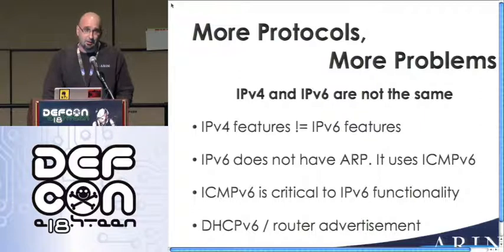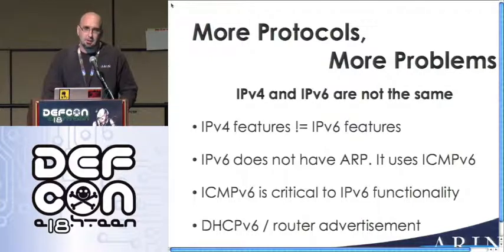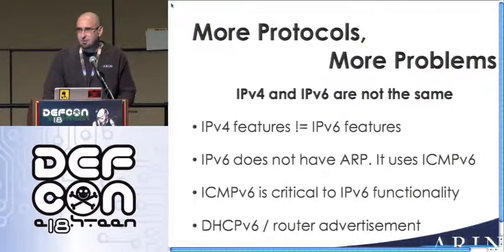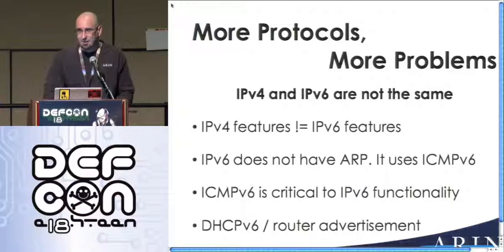One thing you can do right now if you need that level of security is to look at 802.1X — something basically agnostic to the protocol, working at the Ethernet layer — to simulate a lot of that same access control. Within a year or so you're going to see just about every switch Cisco makes, everything Juniper makes, and even Linksys and others starting to make managed switches that support V6 filtering functionality.